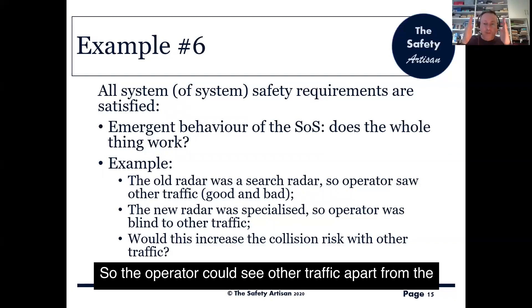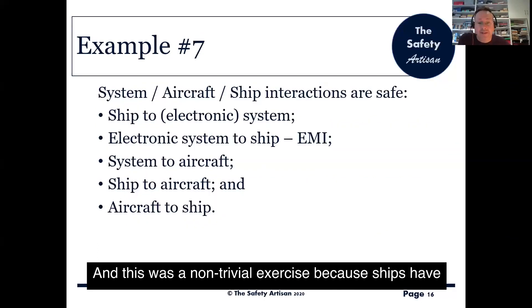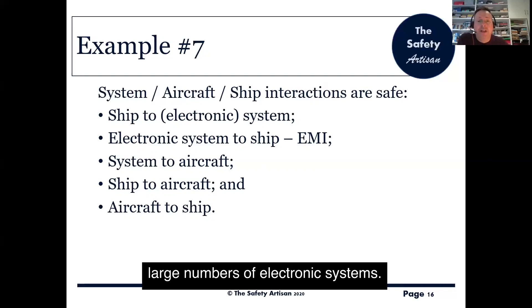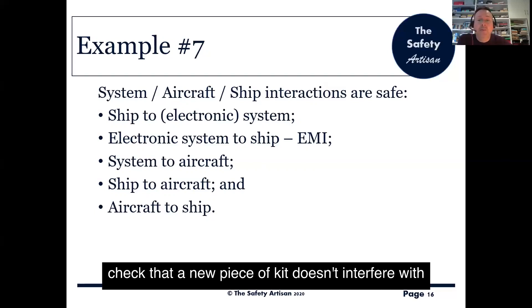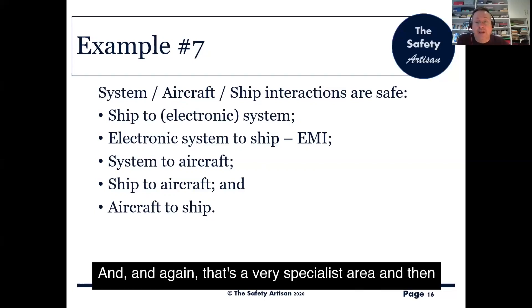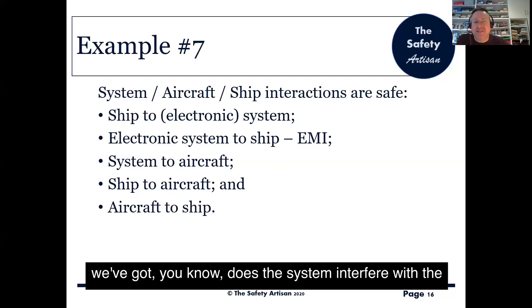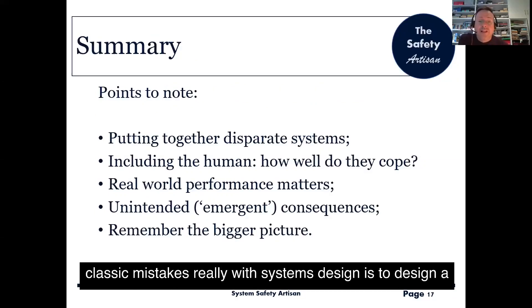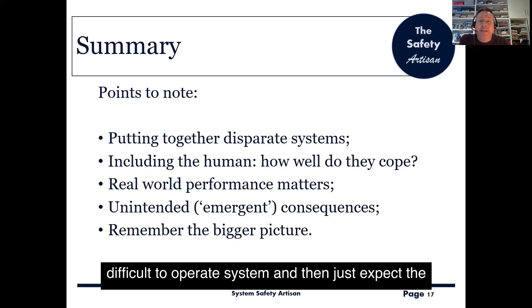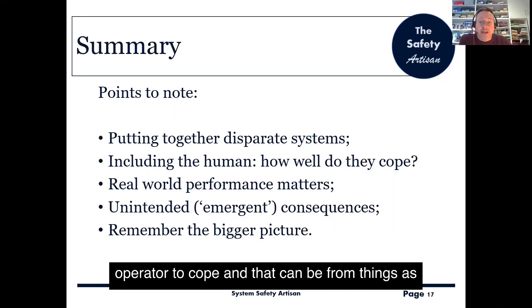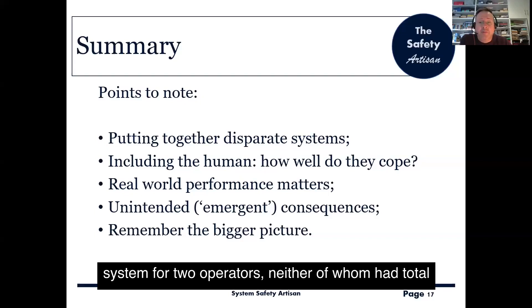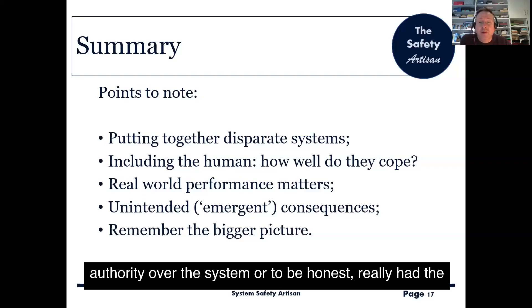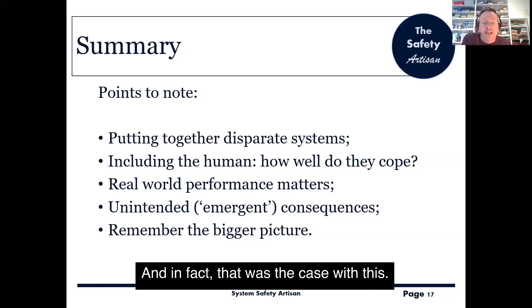The operator could see other traffic apart from the plane they were guiding in. This was a non-trivial exercise because ships have large numbers of electronic systems, and there's a very involved process to check that a new piece of kit doesn't interfere with anything else, or vice versa — that's a very specialist area. Does the system interfere with the aircraft, and the aircraft with the system? A classic mistake in systems design is to design a difficult-to-operate system and just expect the operator to cope — even with something like an amusement park ride that had two operators, neither of whom had total authority or really had the full picture of what was going on.